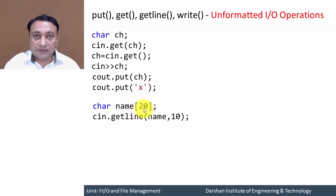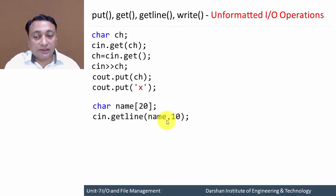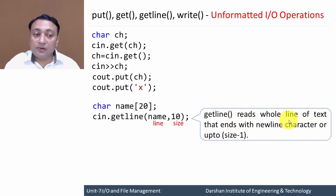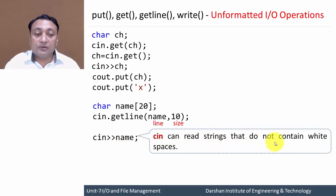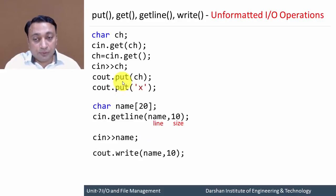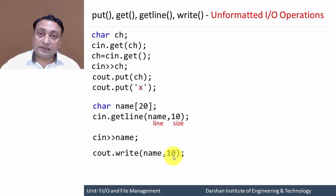Next, we have a character array of size 20. To get an entire line, we use the getline function. We provide the array and the size of that array, and access getline using the cin object. getline reads a whole line of text that ends with a newline character, or up to array size minus one. We can also use cin with the extraction operator, but cin can only read strings that do not contain white spaces. Similarly, the write function is accessed using the cout object and is used to write an entire character array to the output device.